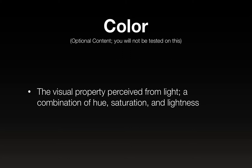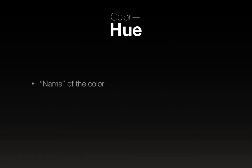Now let's talk about color. This is optional content — it does not appear on a test; I just want you to know about it so that if you want to use color, you can use it right. Color is the visual property perceived from light — a combination of hue, saturation, and lightness. You'll notice that in your Photoshop color picker, you've got a model that represents that hue, saturation, lightness model.